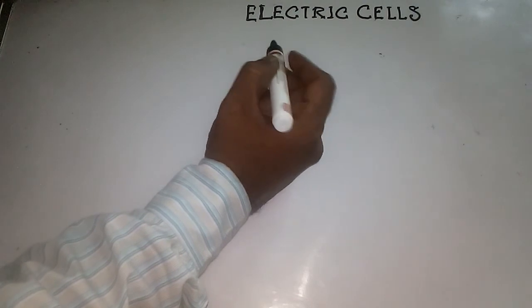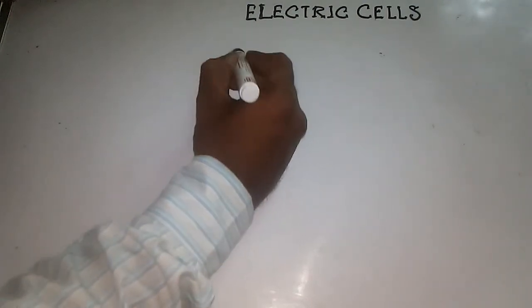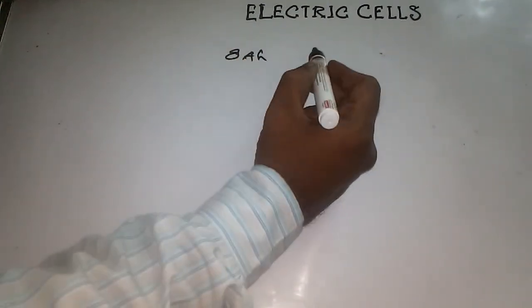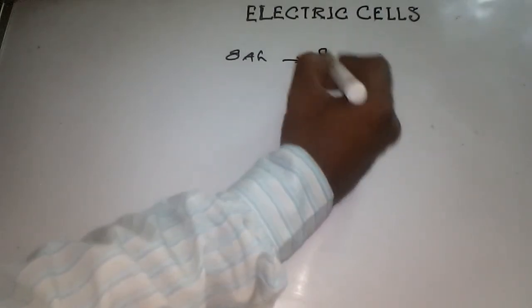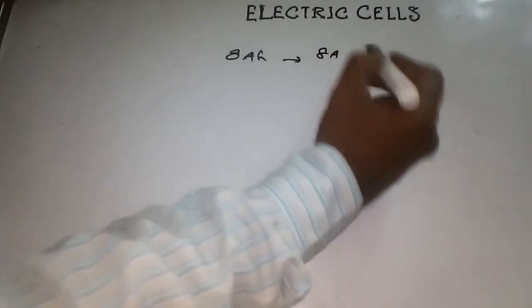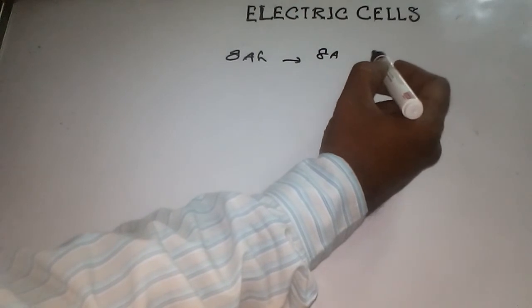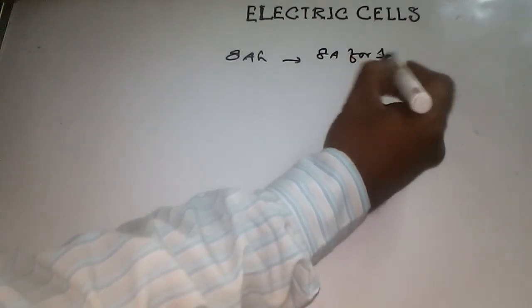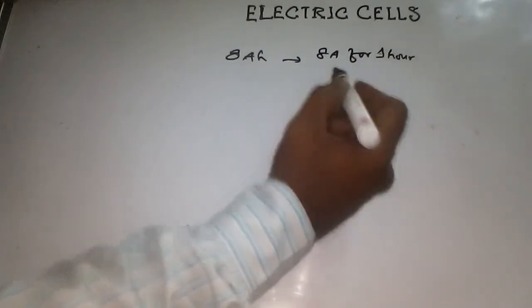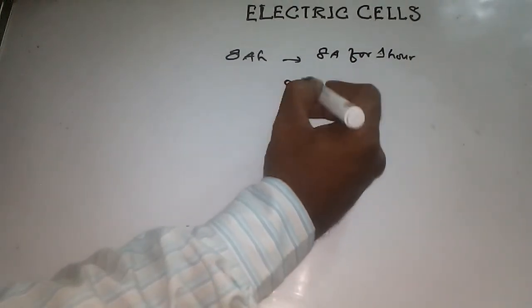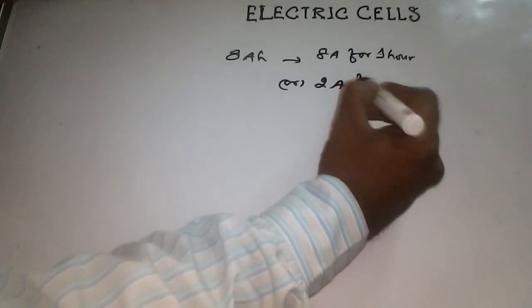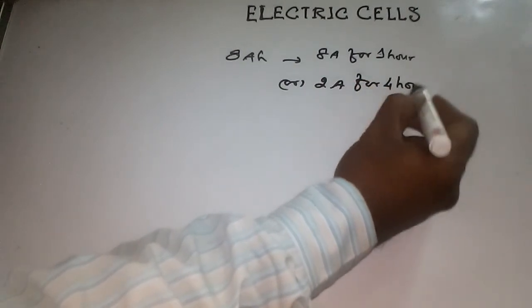For an example, a capacity of 8 Ampere-hours means we can draw 8 Ampere current for 1 hour, or 2 Ampere current for 4 hours.